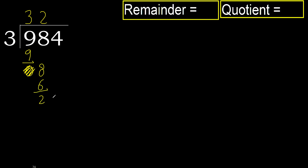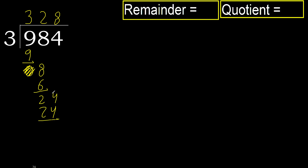Next, bring down 24. 3 multiplied by 9 is 27, which is greater. 3 multiplied by 8 is 24, which is not greater. OK. Subtract.